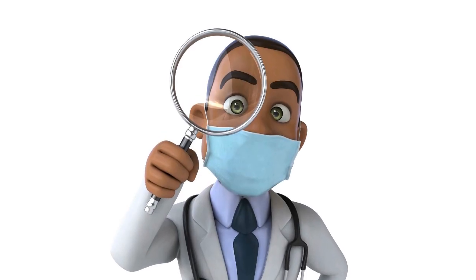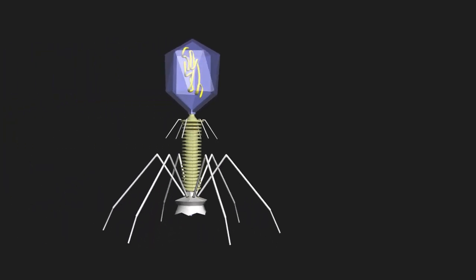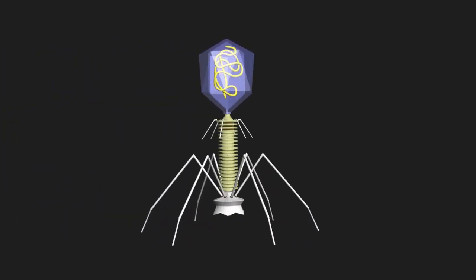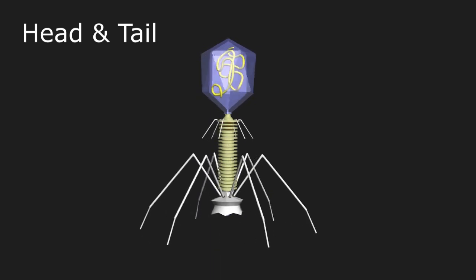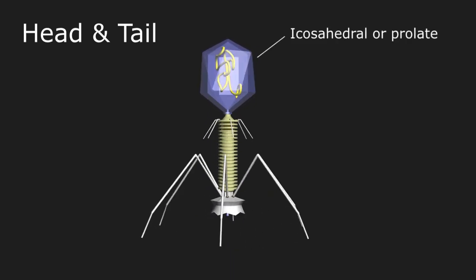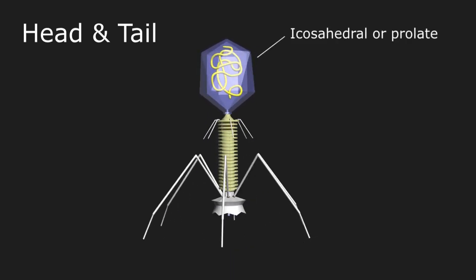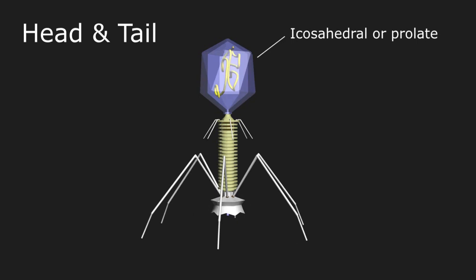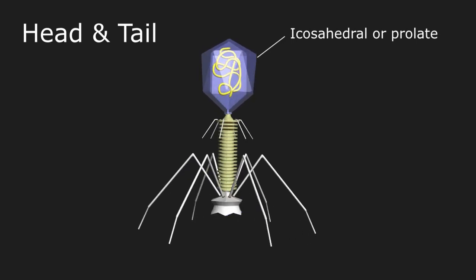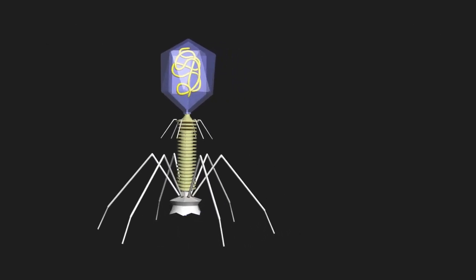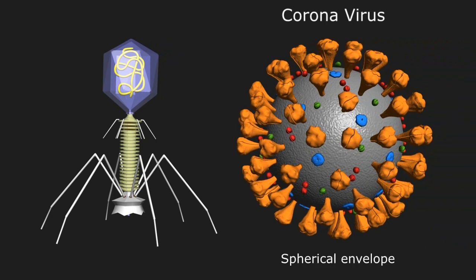First, let's take a look at a virus. Viruses come in many shapes and sizes, but all have common features. This version is called a head-and-tail configuration with an icosahedral or prolate head made up of multiple equilateral triangles arranged in a symmetric fashion. The coronavirus, on the other hand, is a spherical envelope with multiple spike-like projections emanating from the viral surface, creating a crown appearance, hence the moniker corona.